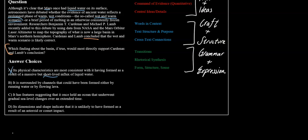Let's look at B. It is surrounded by channels that could have been formed either by running water or by flowing lava. Well, lava isn't really directly supporting our claim, so we can rule out B. Especially because of this idea of either, meaning that it's really not a very direct correlation between flowing water and flowing lava.